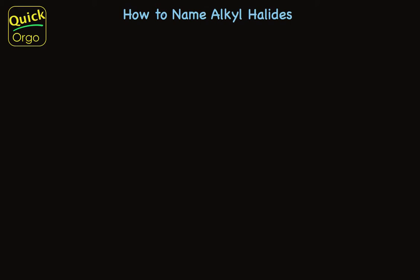There are two ways to name alkyl halides. They're both straightforward. First, there are what most people call common names — the names that chemists use to talk about these compounds when they're talking about them among themselves. And then there are the systematic names, the names that are formed using a set of rules. First, let me talk about the common names.